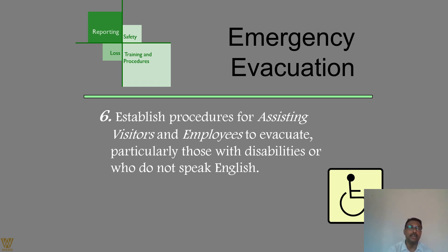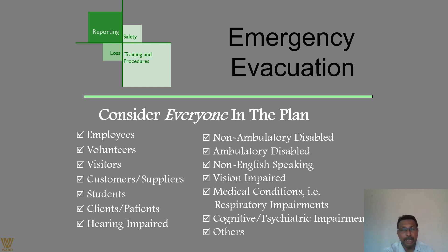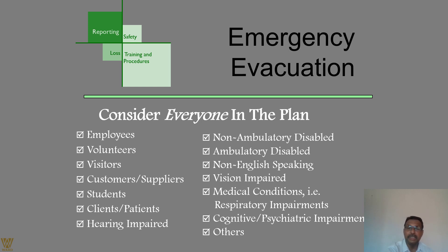Establish procedures for assisting visitors and employees to evacuate, particularly those with disabilities and those who are not conversant in English. The emergency evacuation plan must consider everybody — include everyone in the plan and communicate with everyone. Everyone working in the premises for more than two years should have participated in at least one mock drill. This includes employees, volunteers, visitors, customers, suppliers, students, clients, patients, hearing-impaired, non-ambulatory disabled, ambulatory disabled, non-English speaking, and vision-impaired individuals.